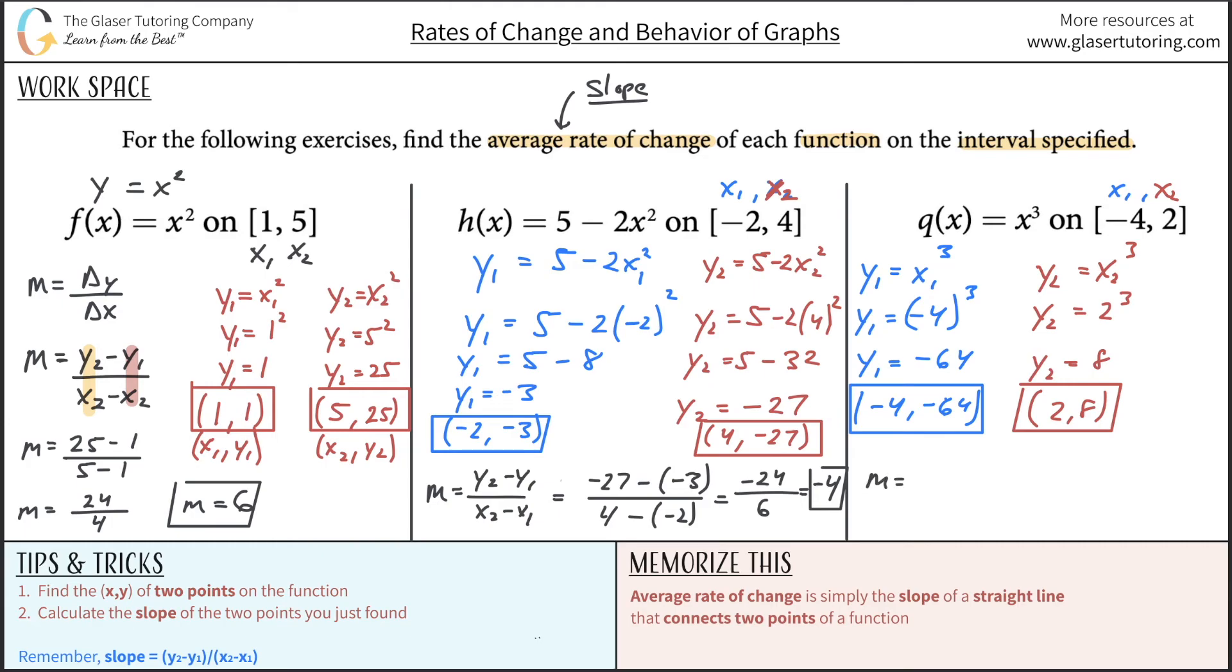Again, we write out our slope formula: it's equal to Y2 minus Y1 over X2 minus X1. And lo and behold, we can now plug it in. Remember, these are the twos, these are the ones. It doesn't actually matter if you call these the twos and these the ones. The math would work out the same. Try it for yourself, as long as you're consistent. So 8 minus negative 64 over 2 minus negative 4. This is really like saying 8 plus 64, which should be 72, all divided by 2 minus a negative 4, which is saying the same thing as 2 plus 4, which would be 6. And then we would divide it out and we realize that it comes out to a value of 12. So that's the average rate of change, 12.